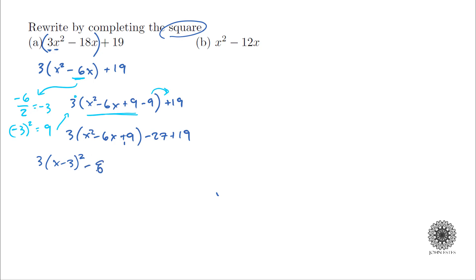There it is, I simplified by using completing the square. For the second example we do the same thing. This time I don't have to factor out the leading coefficient because it's already 1. I take my linear term negative 12, I divide by 2 to get negative 6, I square that to get 36, and then I will add that back in so I have x squared minus 12x plus 36 minus 36.